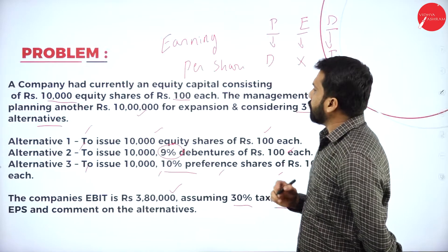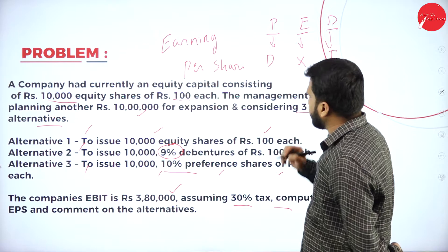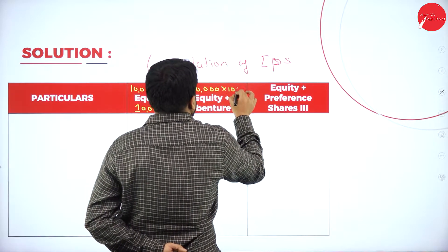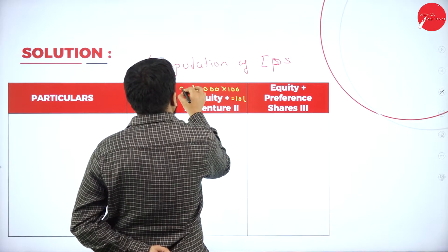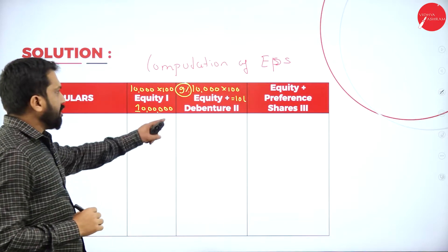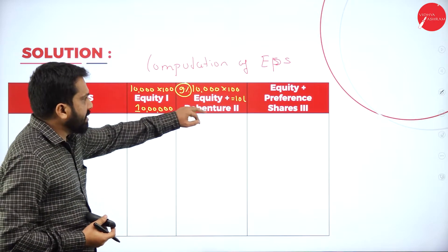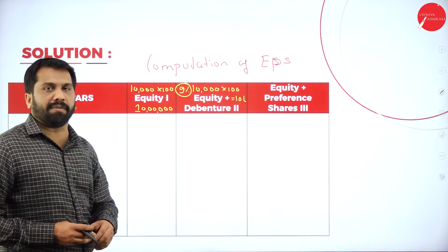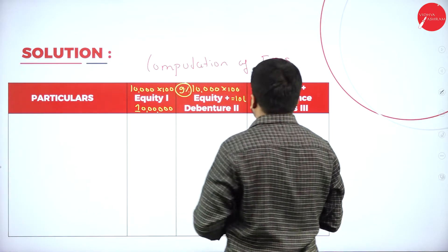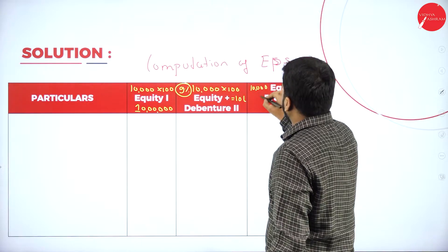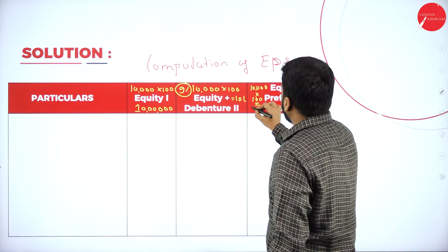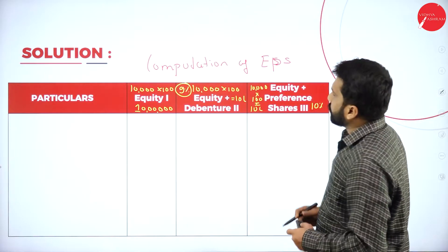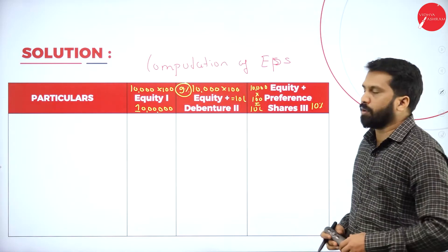Option 2 is 10,000 nine-percent debentures of Rs. 100 each — 10,000 into 100 equals 10 lakh, at 9%. Note: we already have existing equity; for this calculation we don't add equity again. The third alternative is preference shares — 10,000 into 100 equals 10 lakh, at 10% dividend.